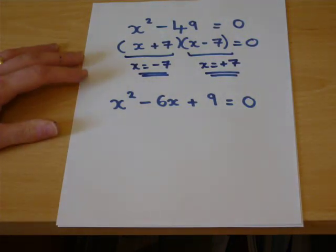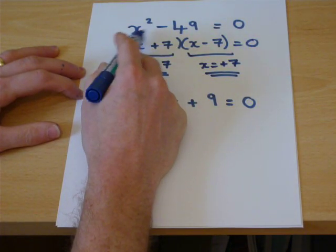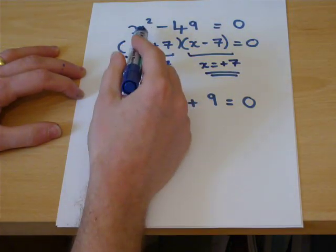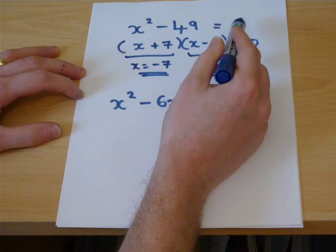And in hindsight, it's fairly obvious because, of course, 7 squared is 49, take away 49 equals 0. Or minus 7 squared is also 49, take away 49 equals 0.